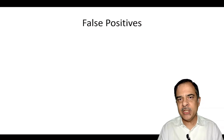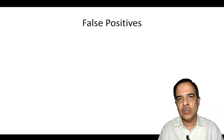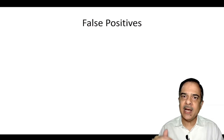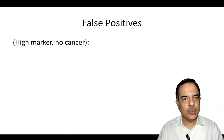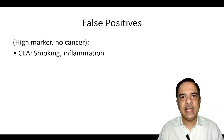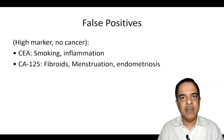A disadvantage is there can be false positive as well as false negative results. False positive means there is no cancer but the markers are still elevated. For example, CEA can be elevated in smokers or in inflammation. CA-125 can be positive in fibroids, which is a benign condition, or endometriosis.